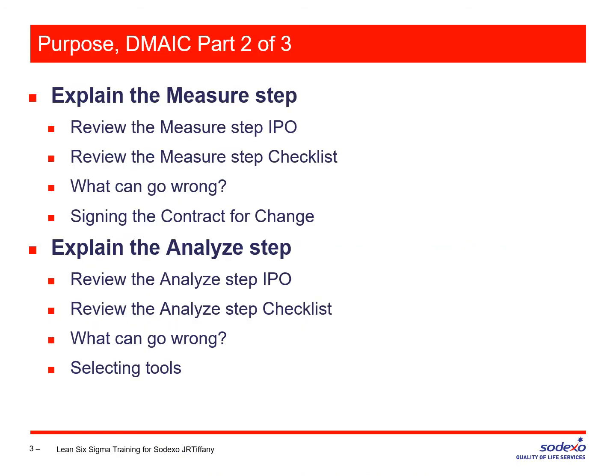Here is the purpose of part two of DMAIC. We'll talk about the measure step and the analyze step. For each of these, I am going to go through the IPO — the input process output diagram. And for each of these two steps, I strongly recommend that you use the checklist provided in our training materials, at least the first several times when you go through a DMAIC process. We'll talk about what can go wrong in measure and analyze, and we'll talk about some of the tools you might use.